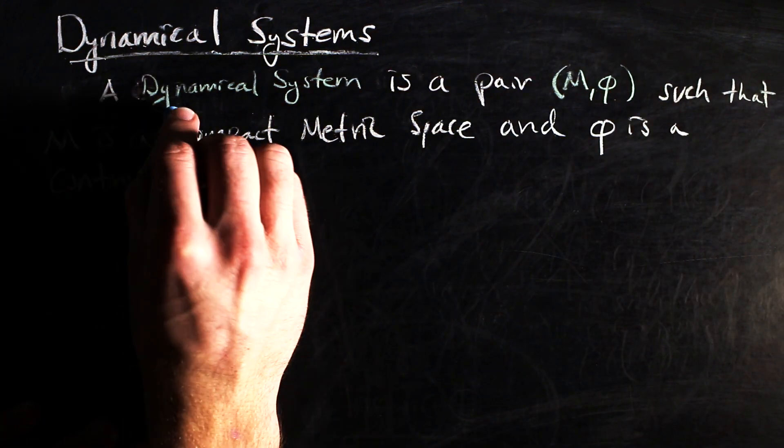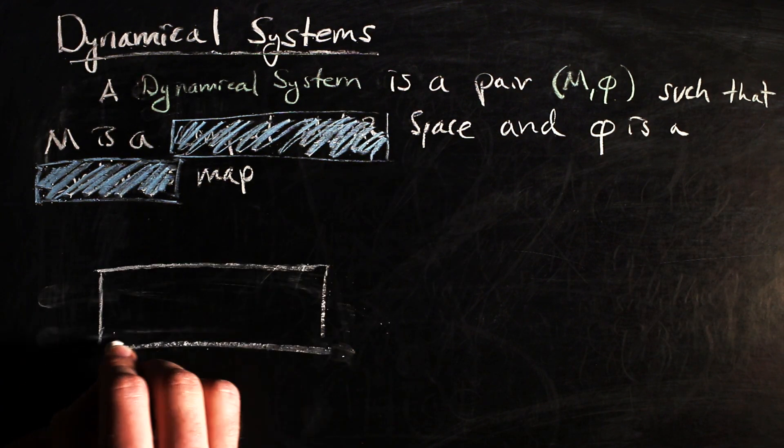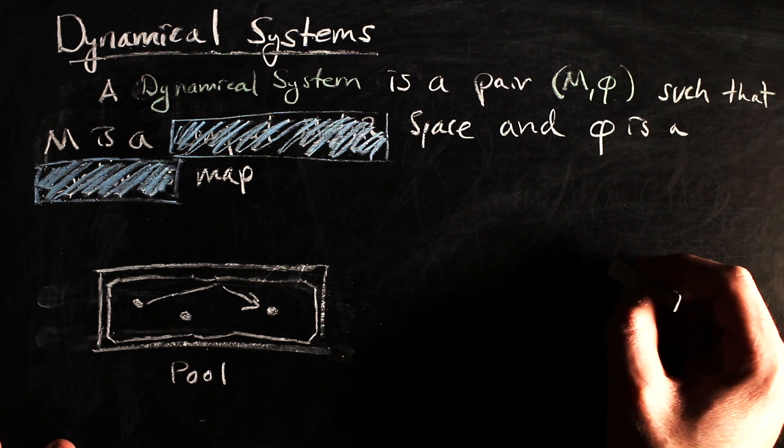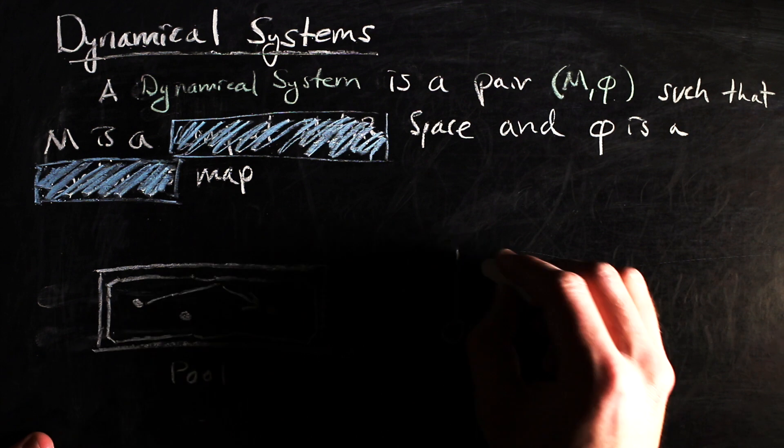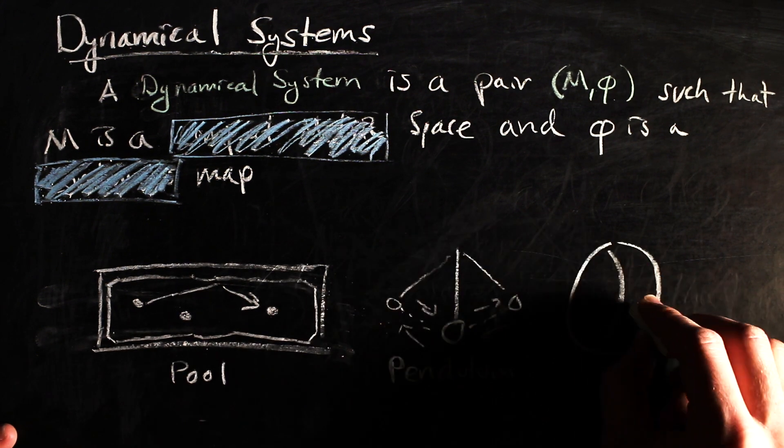For the purposes of this video, we're not going to worry too much about these qualities of M and φ. But the important thing is that there are a lot of different examples of dynamical systems in the real world. The game of billiards or pool and pendulums are all examples that fit in this box of dynamical systems.